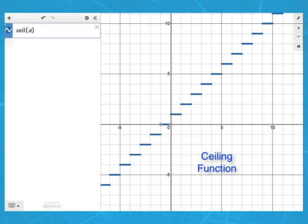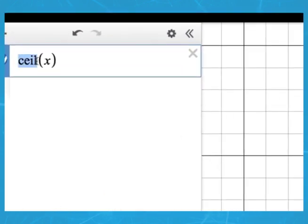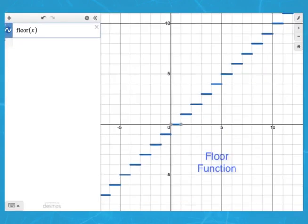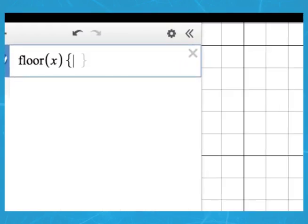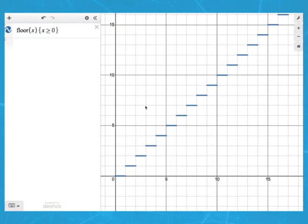To input a floor function, input FLOOR with x in parentheses. You'll see the step function that rounds down. This is the function we'll be working with. First, we'll want to restrict its graph to the first quadrant. Note the changes to the domain of the function.